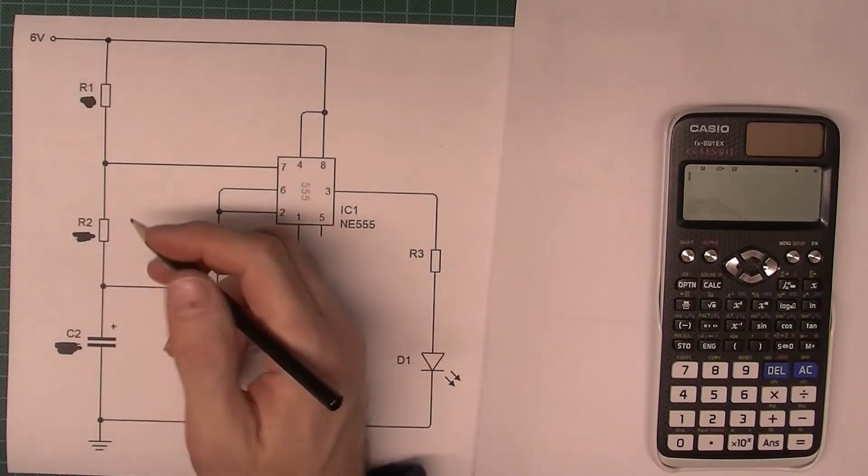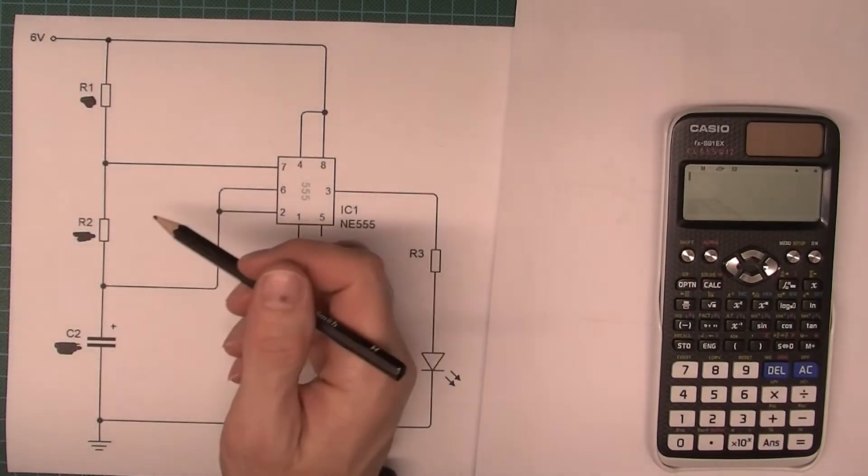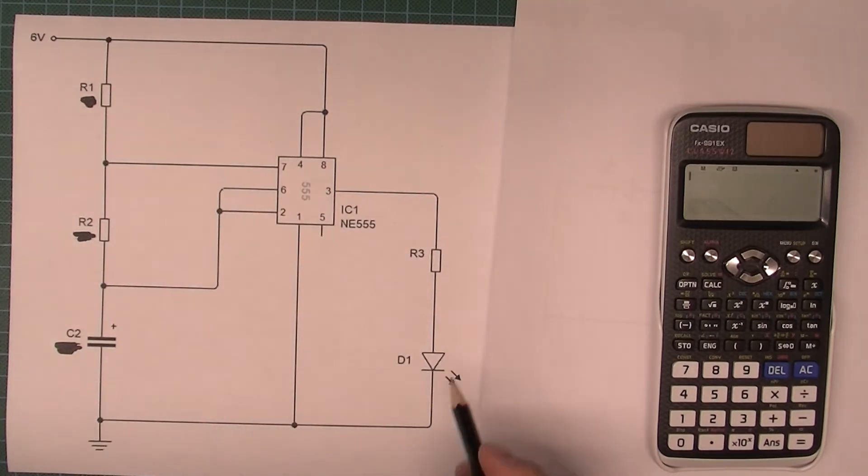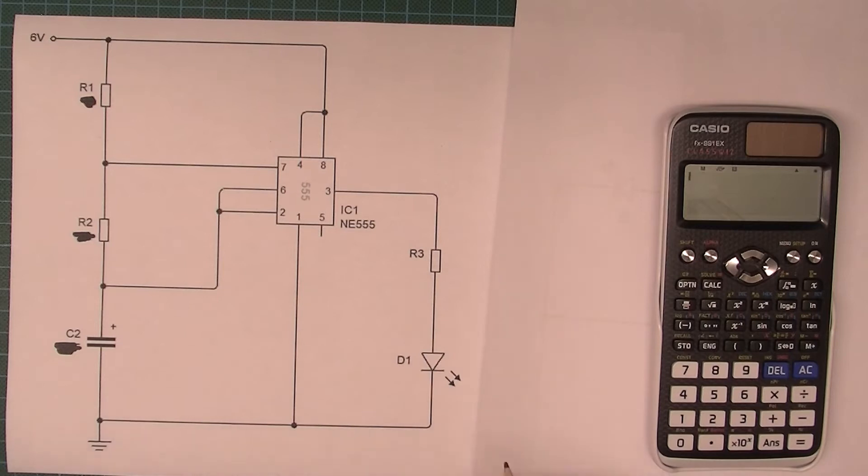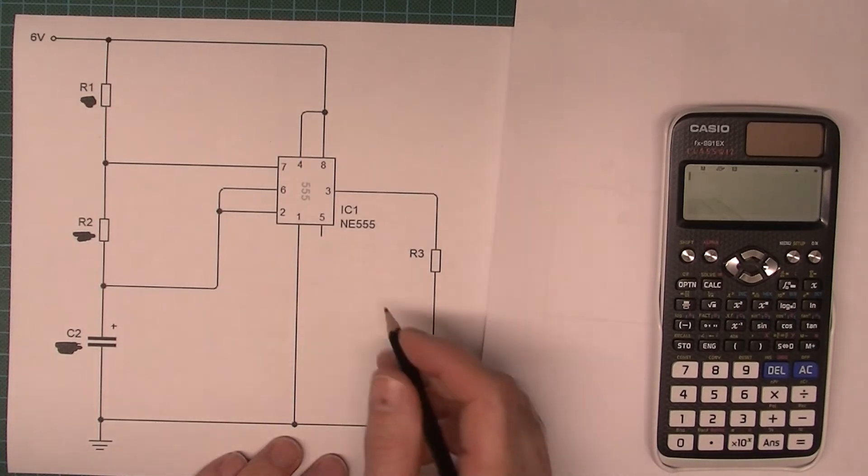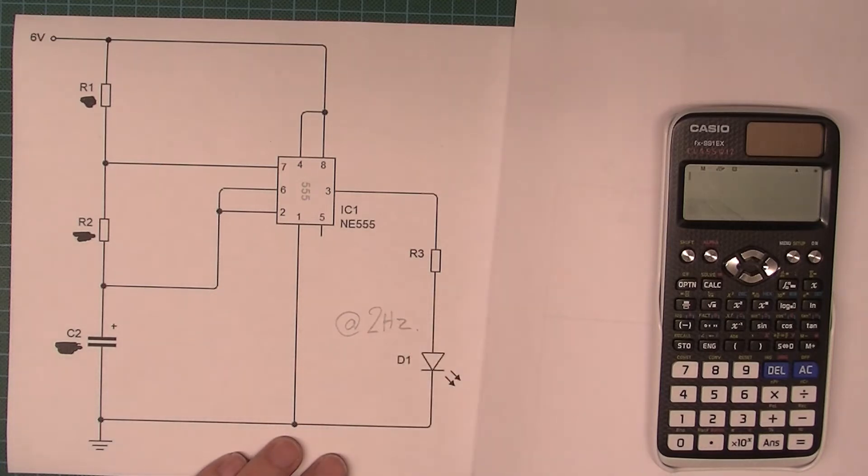Okay, in this video I'm going to take you step by step through the calculations to achieve a particular frequency with this astable timer. The timing that we're going to use is a frequency of 2 Hertz. Okay, so that's our target frequency.